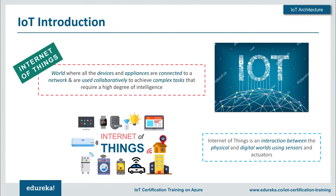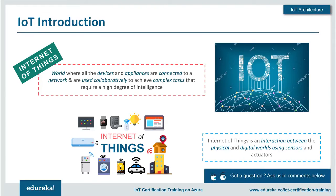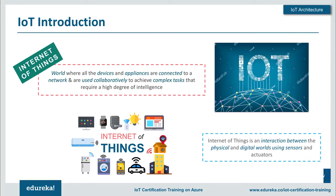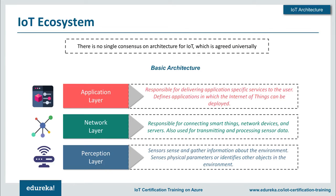Another definition of internet of things is that it is an interaction between the physical and digital world using sensors and actuators. When devices around us communicate with each other and build a smarter system, it makes our lives much easier.